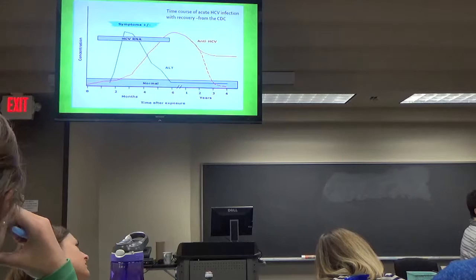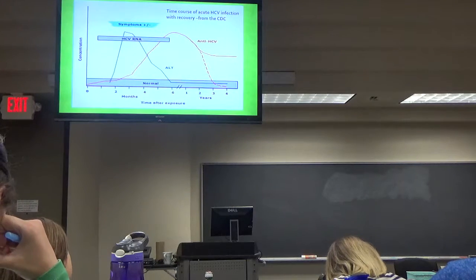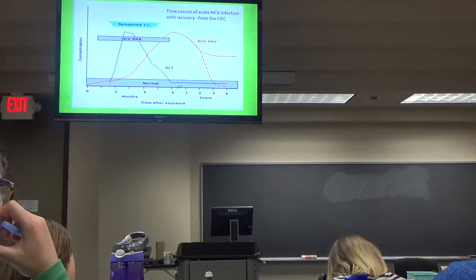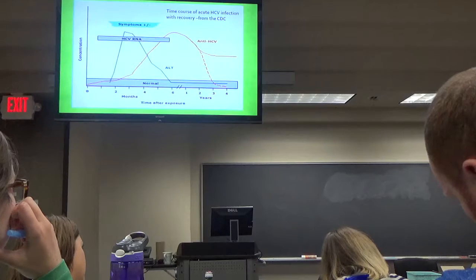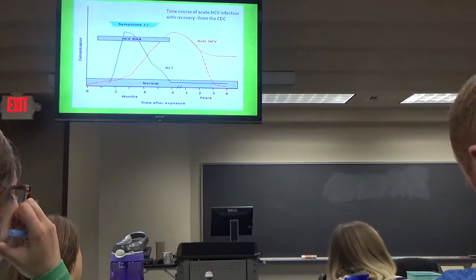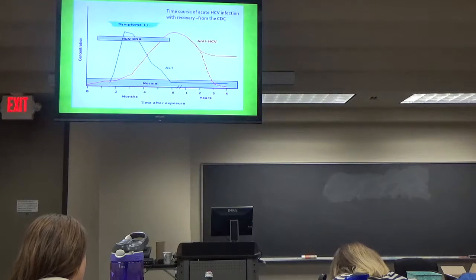So when we say ULN, upper limit of normal, then what would that look like? If it's 10 to 20, what would that be? Upper limit of normal is 40, then 10 times that is 400 to 800.